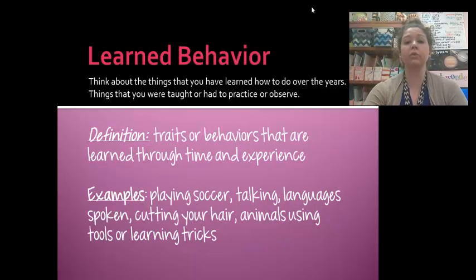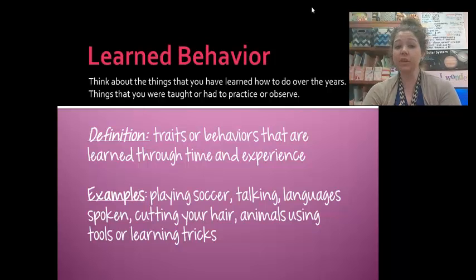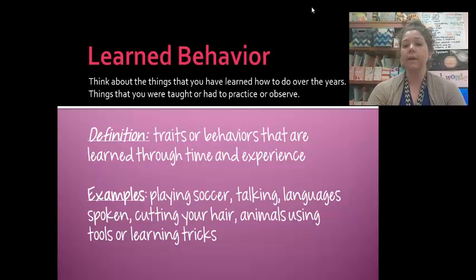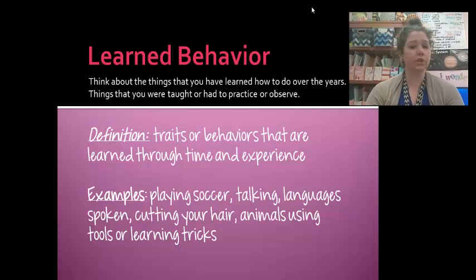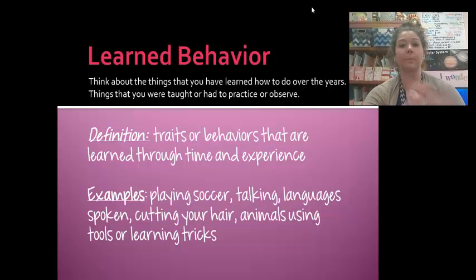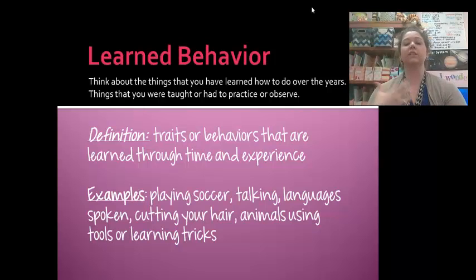On the other hand, through life experience we learn some things — that's what we call learned behaviors. Think about everything that you've learned how to do over the years, things that you had to be taught, practiced, and observed, like math. Math is not an inherited trait; you had to learn how to do math problems. You had to learn how to ride a bike, how to play soccer, how to play those video games — how to play Minecraft. Those are learned behaviors. Our definition is: a trait or behavior that is learned through time and experience.